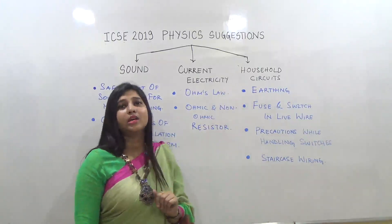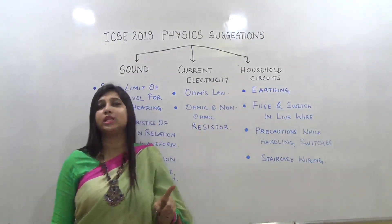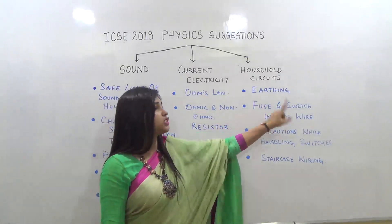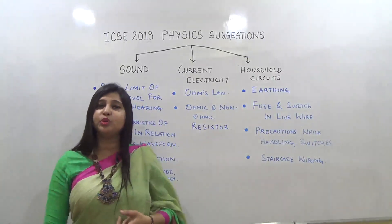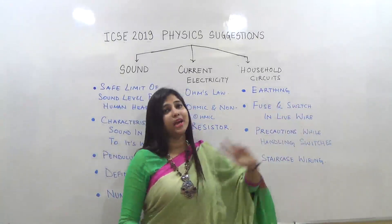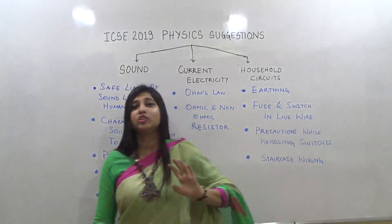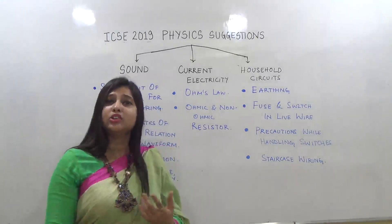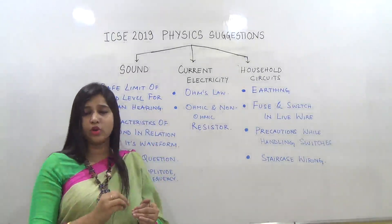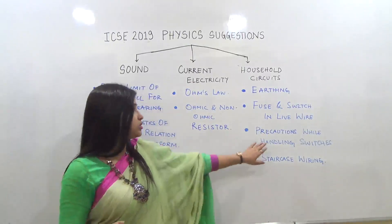Under household circuits, the first topic is earthing — what is earthing and why is it essential? Secondly, fuse and switch: we know fuse and switch are connected in the live wire, so a question may be why we connect fuse and switch in the live wire. Lastly, precautions while handling switches — such as not touching a switch with wet hands. Mention two or three precautions as required.